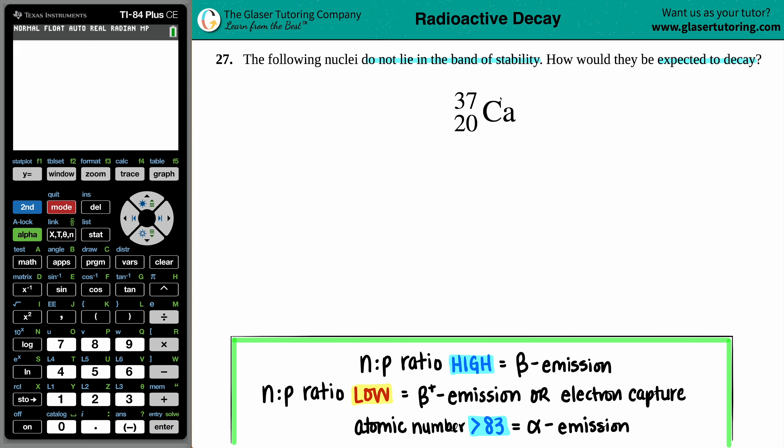Number 27: The following nuclei do not lie in the band of stability. How would they be expected to decay? We have calcium-37. We don't want this calcium in our body though, because this does not lie in the band of stability. This is classified as an unstable nuclei, which in turn is going to be radioactive.